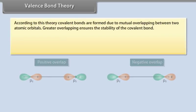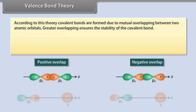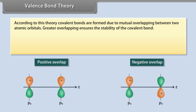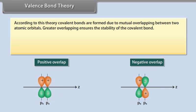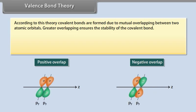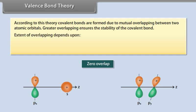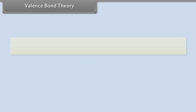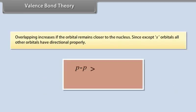Valence Bond Theory. According to this theory, covalent bonds are formed due to mutual overlapping between two atomic orbitals. Greater overlapping ensures the stability of the covalent bond. The extent of overlapping depends upon the nature of orbitals and nature of overlapping, and overlapping increases if the orbital remains closer to the nucleus.